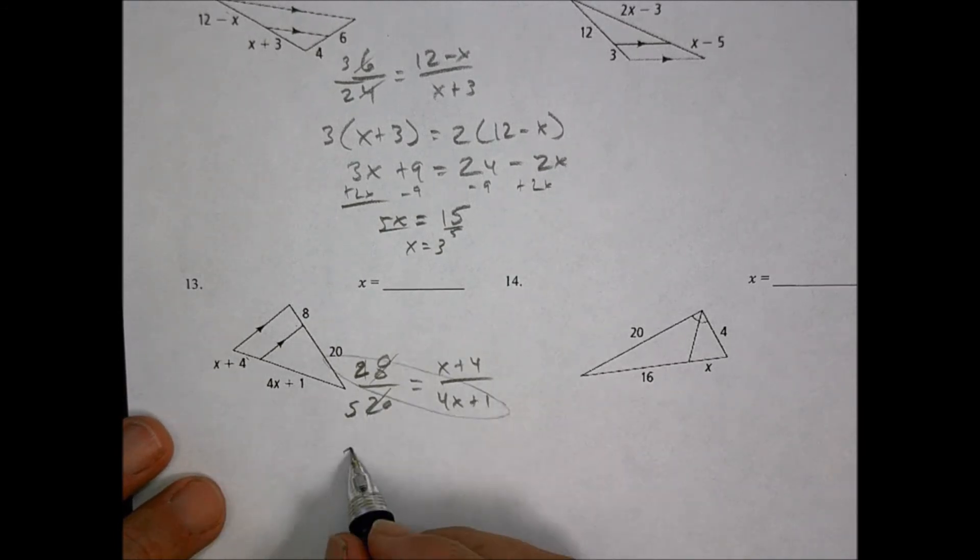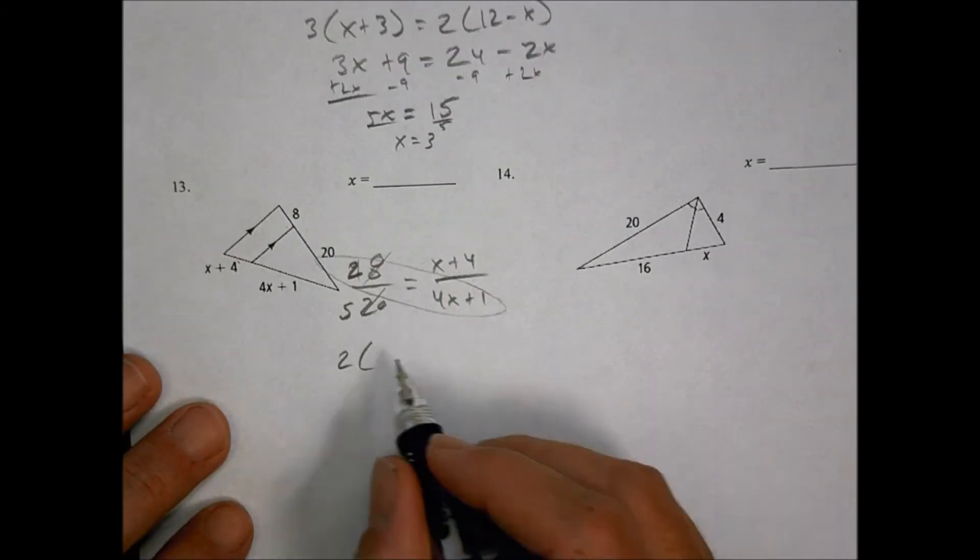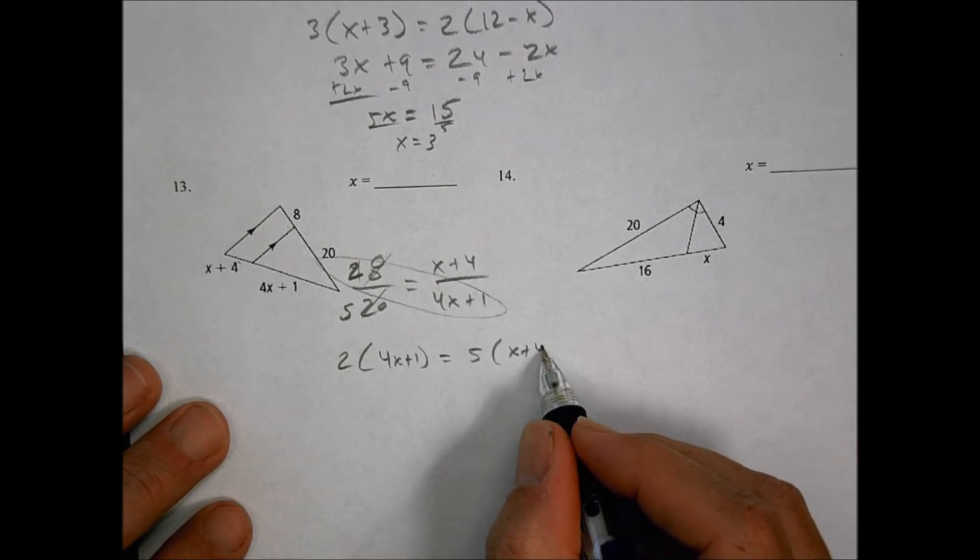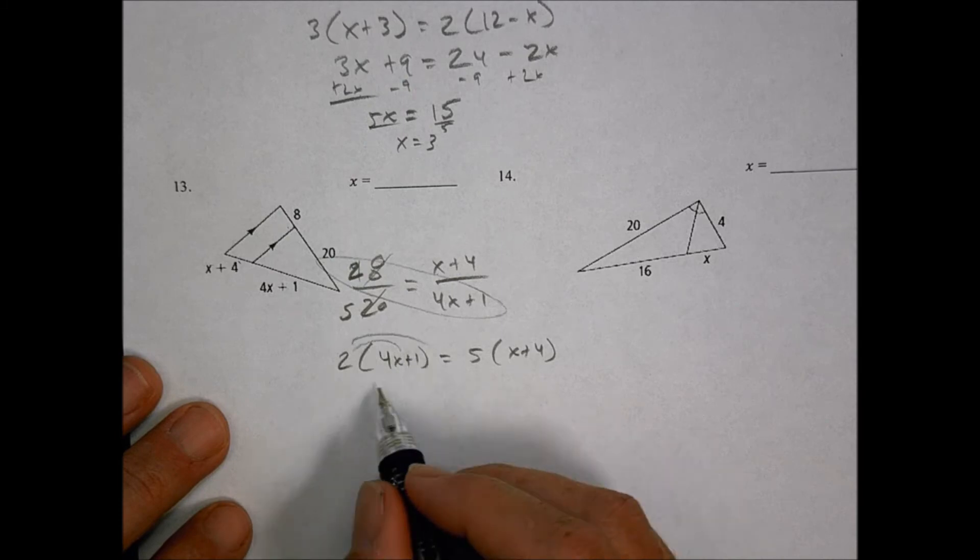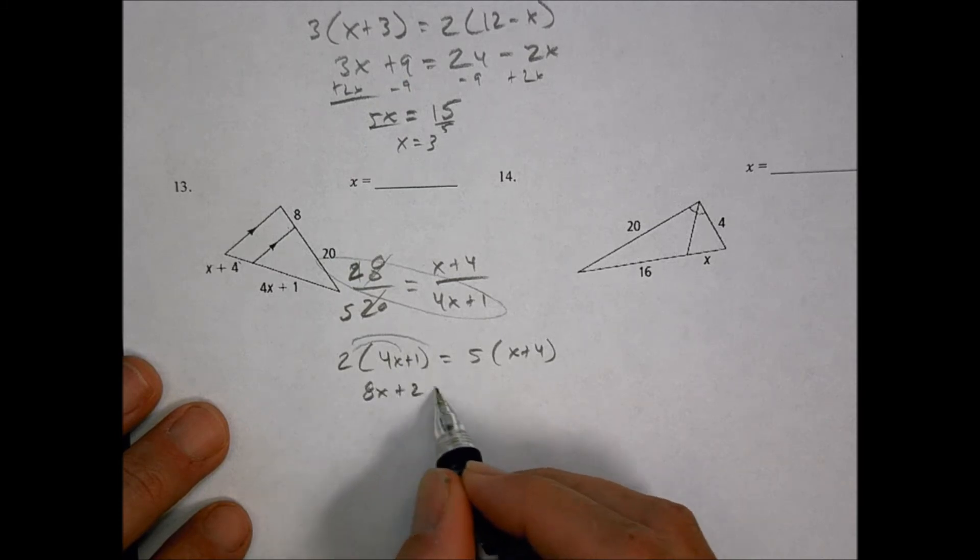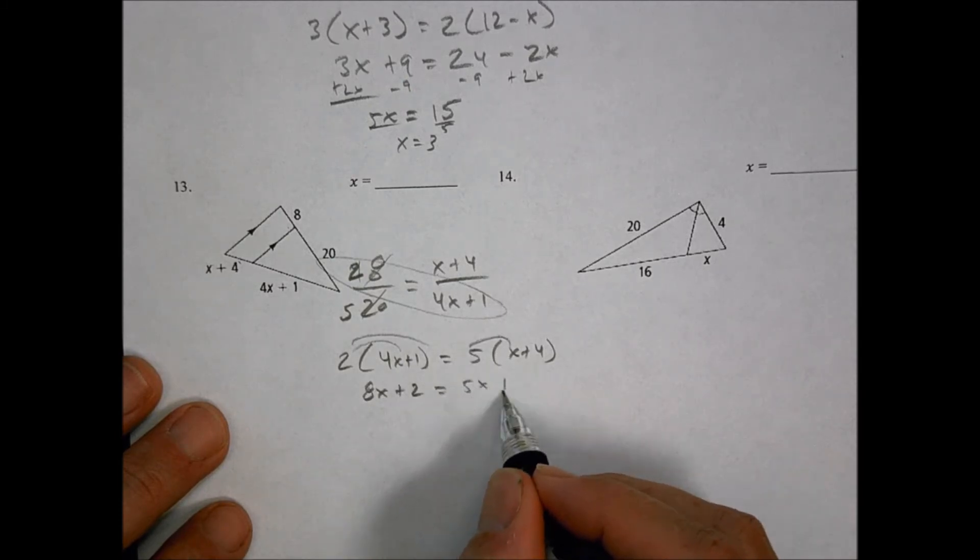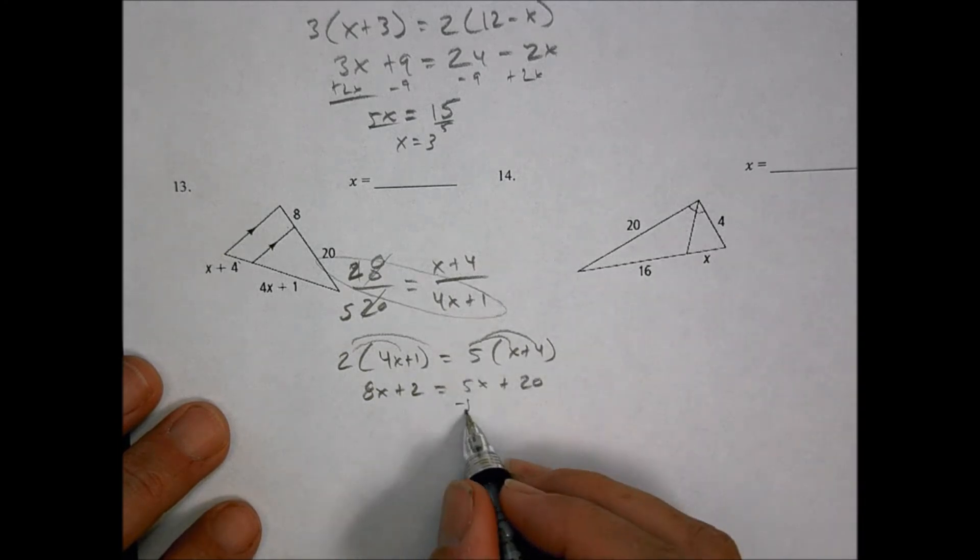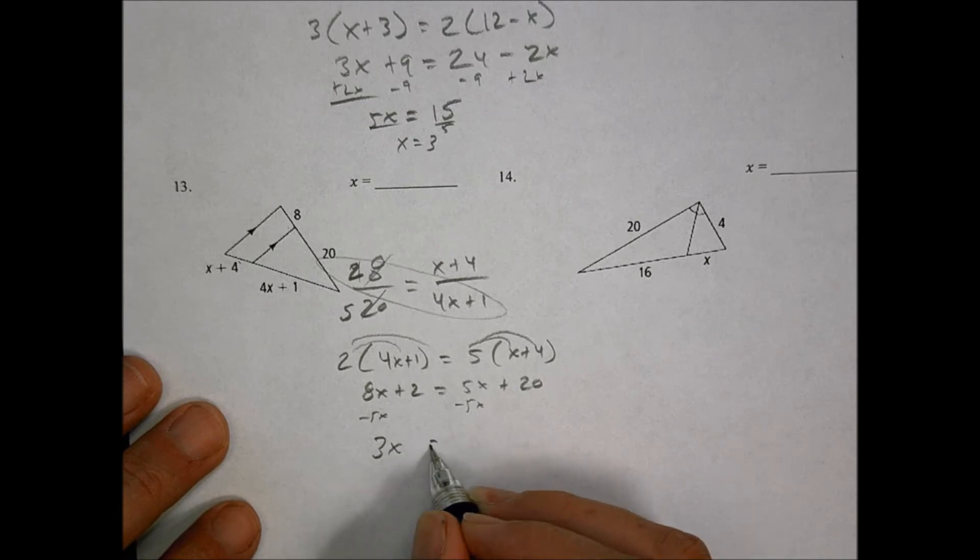We cross multiply, and we have 2 times 4x plus 1 equals 5 times x plus 4. We cross multiply here and have 8x plus 2 equals 5x plus 20. We do our distributive property.